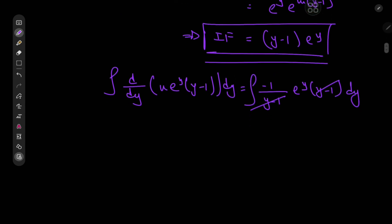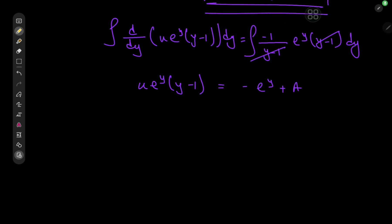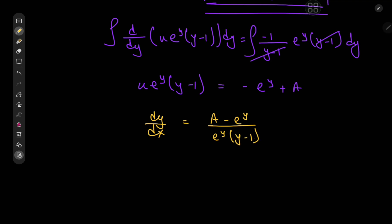That gives us u times e to the y times y minus 1 equal to negative e to the y plus some constant of integration a. Now is a good time to recall that u here is just dy by dx, so we have a separable equation in x and y: dy by dx equal to a minus e to the y divided by e to the y times y minus 1.